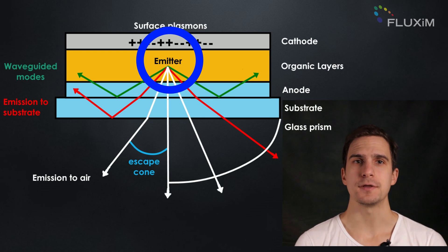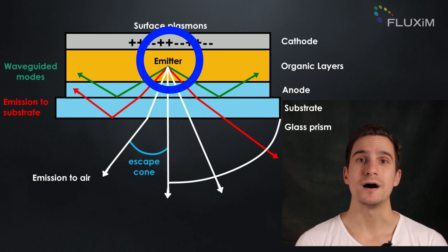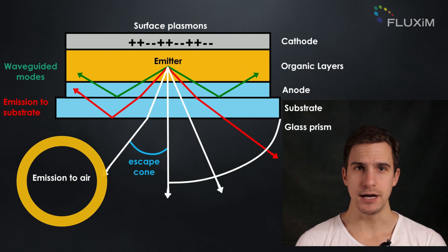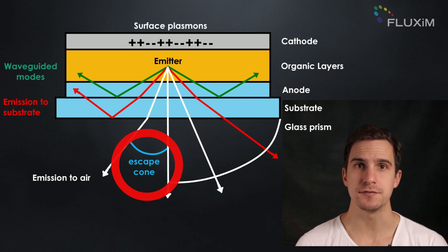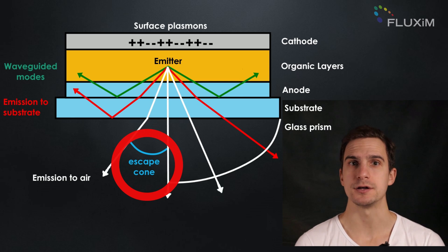IQE is the emission of the bare active material, while the EQE quantifies the light emission of the full device. The light exits the device if it is emitted within the escape cone, which depends on the device structure and refractive index of the layers.